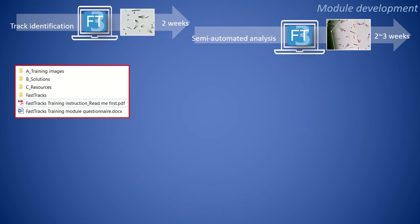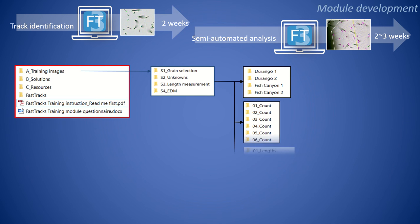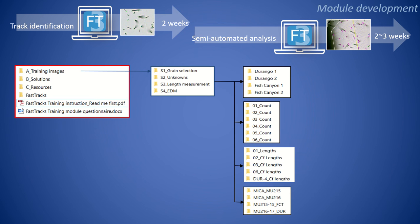The digital training module developed simplifies the training process and involves three main components. The first component is a series of grain and confined track length images, grouped into four sections, each serving a different training purpose.